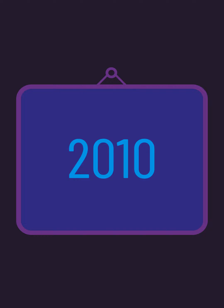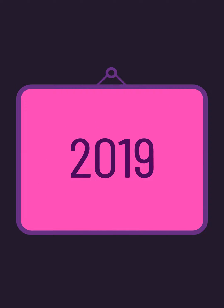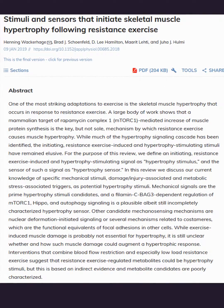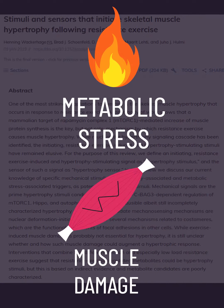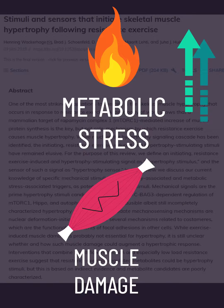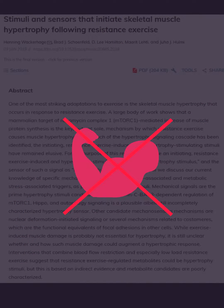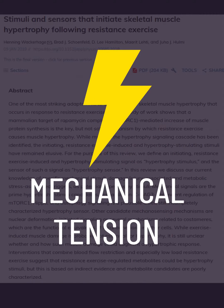However, traveling forward to 2019, Brad Schoenfeld teamed up with Wackerhage and others to create an updated paper. They detail how the evidence behind metabolic stress and muscle damage being drivers of muscle growth isn't crystal clear. Scenarios exist where more metabolic stress or damage are not associated with more muscle growth. Conversely, mechanical tension seems to be the most likely and potent stimulus.